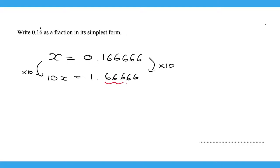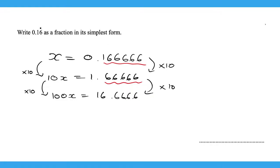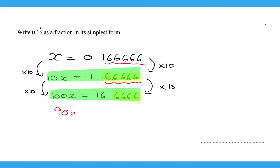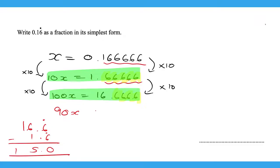Are the numbers after the decimal point the same in both cases? No, they're not. So we multiply by 10 again, giving 100x equal to 16.66666. Now the numbers after the decimal point are the same — 0.666 in both cases. So we subtract: 100x subtract 10x gives 90x, and 16.6̄ subtract 1.6̄ gives 15. So 90x equals 15.